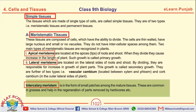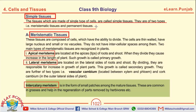The first kind of plant tissue is simple tissues. What are simple tissues? The tissues which are made up of a single type of cells are called simple tissues, and they are of two types: meristematic tissues and permanent tissues.